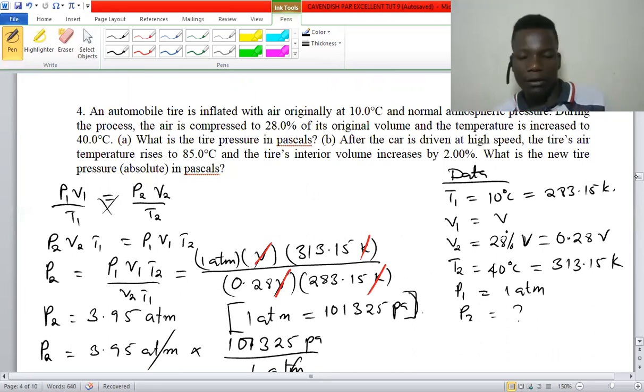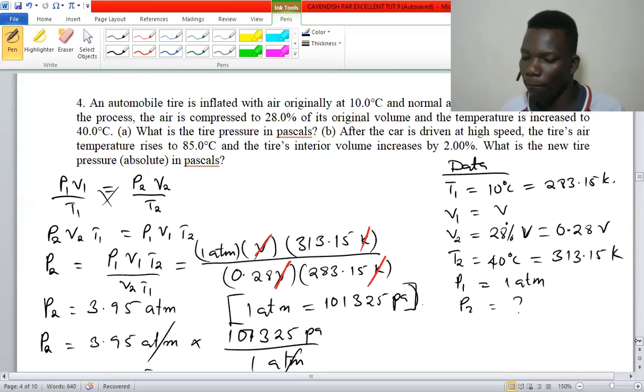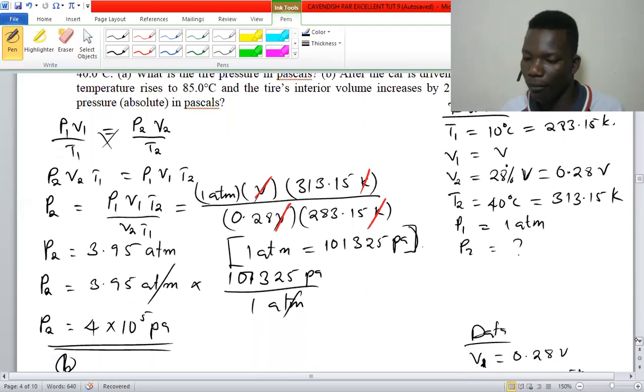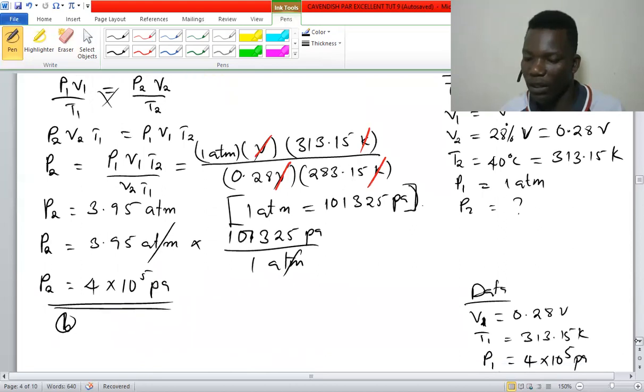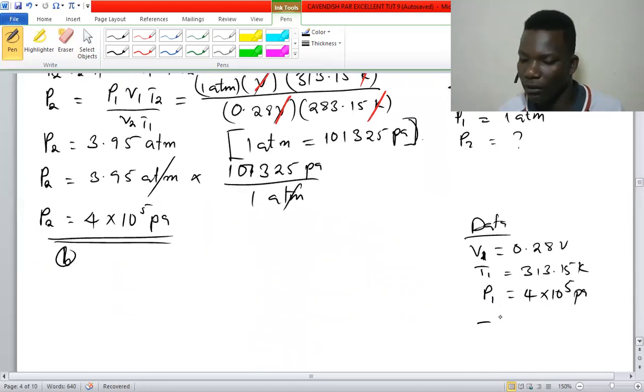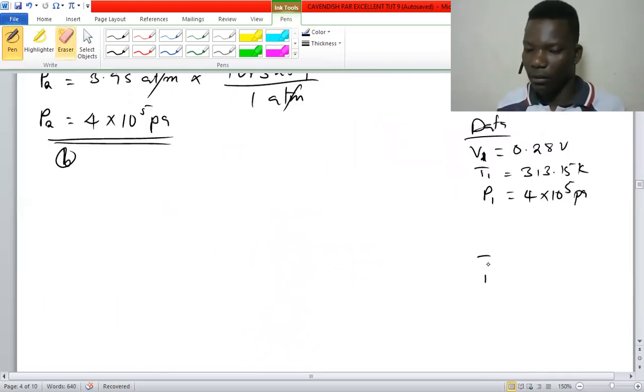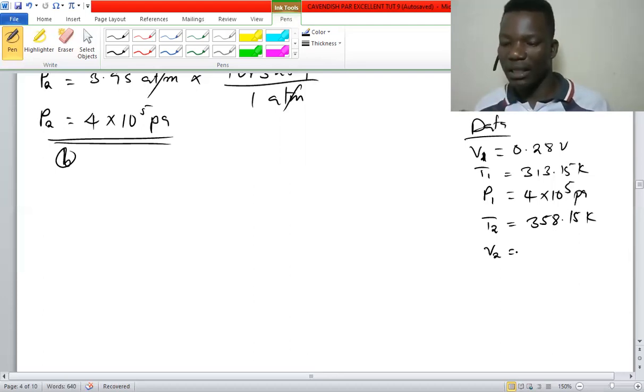85 degrees Celsius is 358.15 K. V2 - we are told it increased by 2 percent, so we have to find the 2 percent of the initial volume and add it to that initial volume.